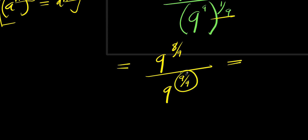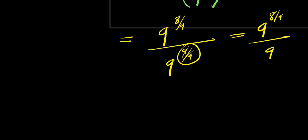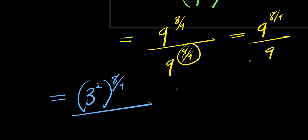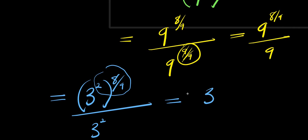This gives us 9 to the power of 8 over 9, divided by 9 — since 9 times 1 over 9 equals 1, so 9 over 9 equals 1. Now, 9 is a perfect square, that is 3 to the power of 2. So we rewrite this as 3 to the power of 2, raised to the power of 8 over 9, divided by 3 to the power of 2. Multiplying the exponents in the numerator gives us 3 to the power of 16 over 9, divided by 3 to the power of 2.